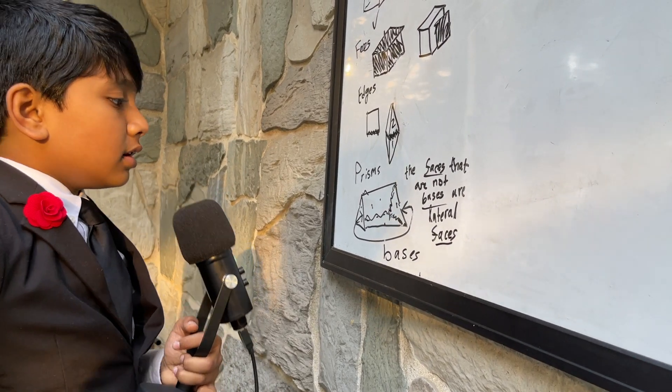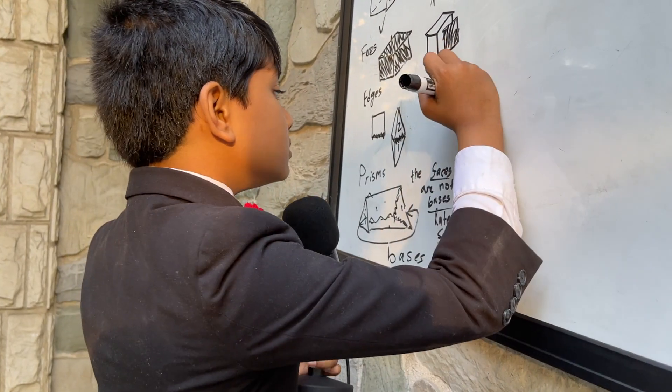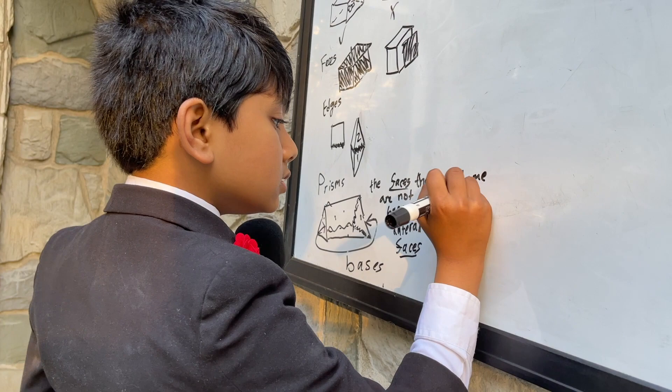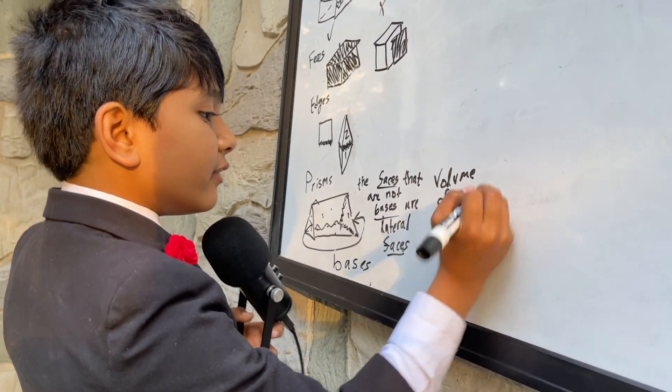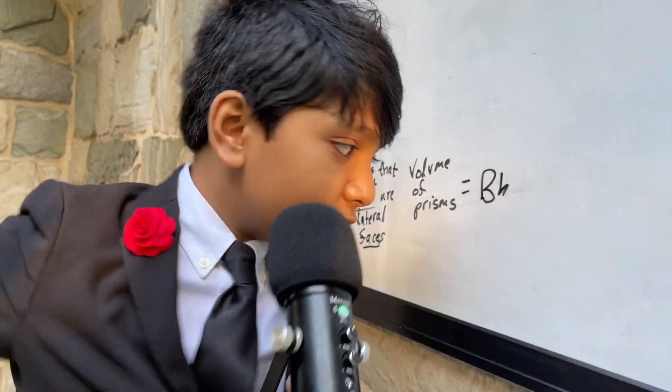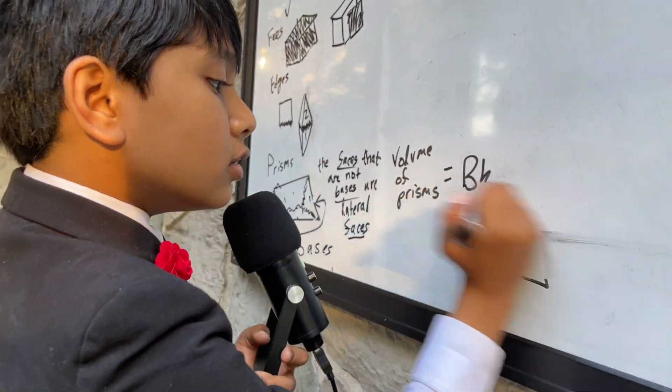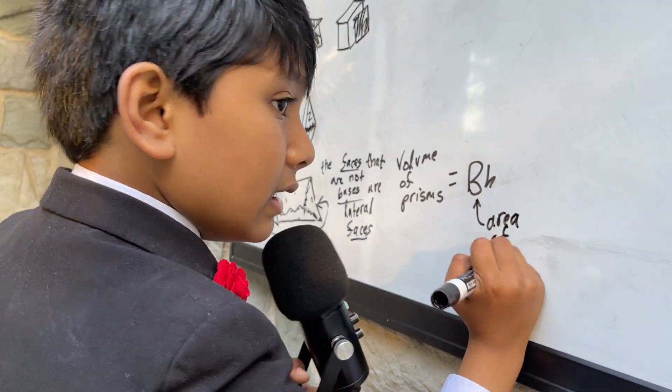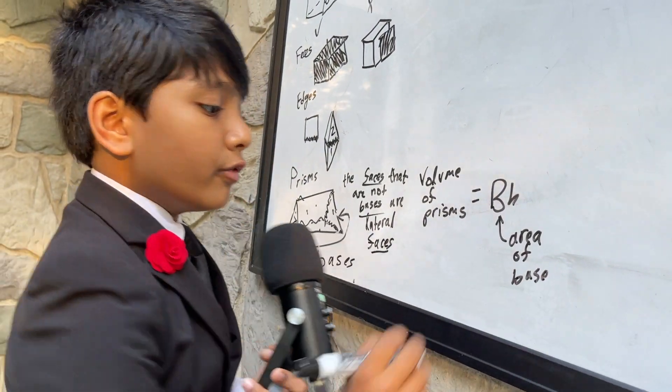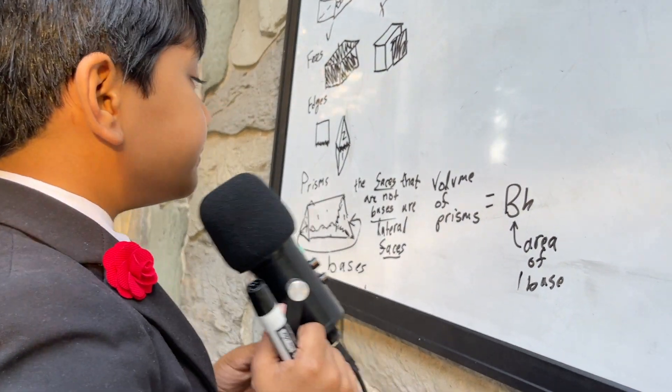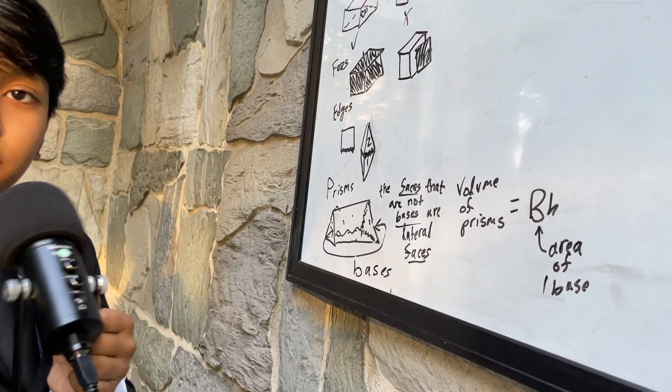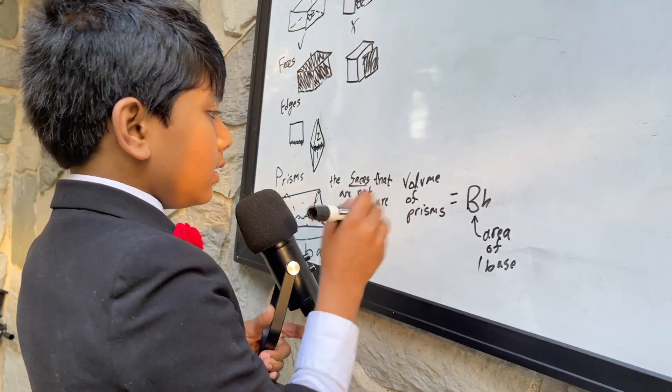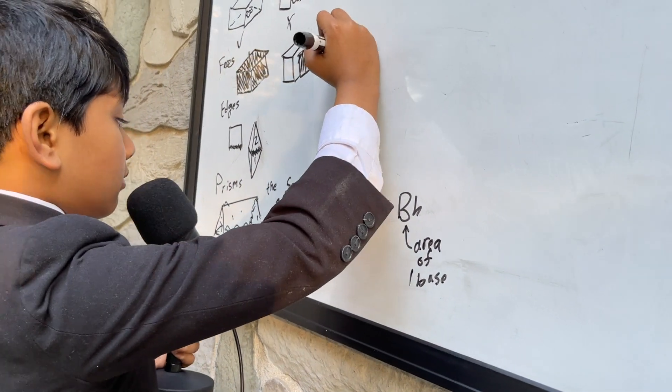So, now, let's get to the bulk of prisms. The volume of prisms can always be found by BH. Don't get that confused with a rectangle. A prism is not a rectangle. It's three-dimensional. B simply means the area of the base. So, of one of the bases.